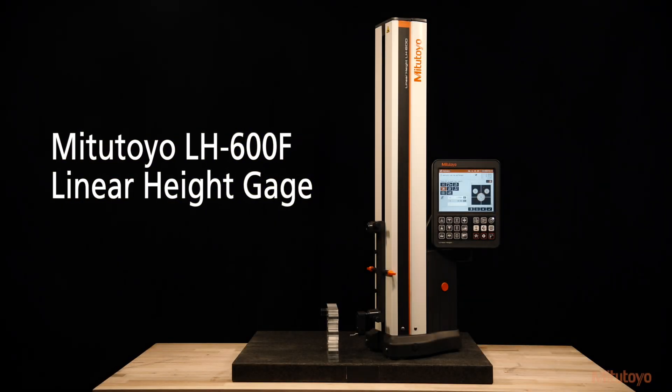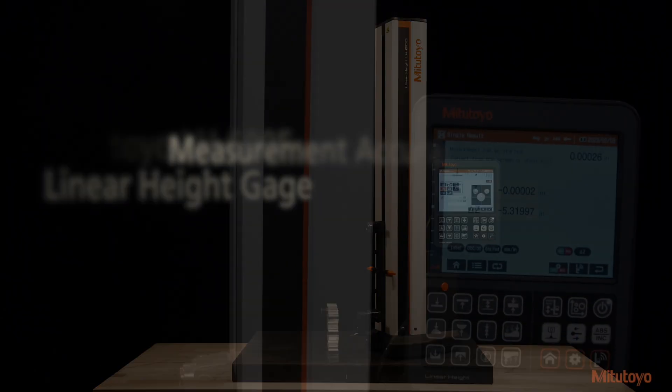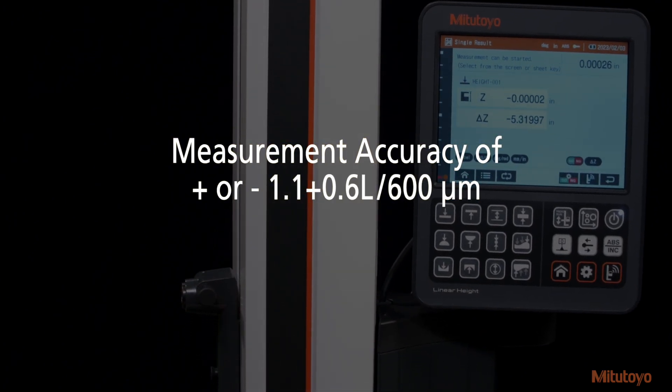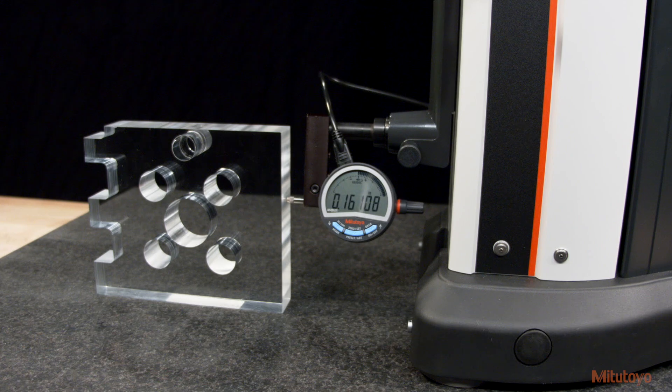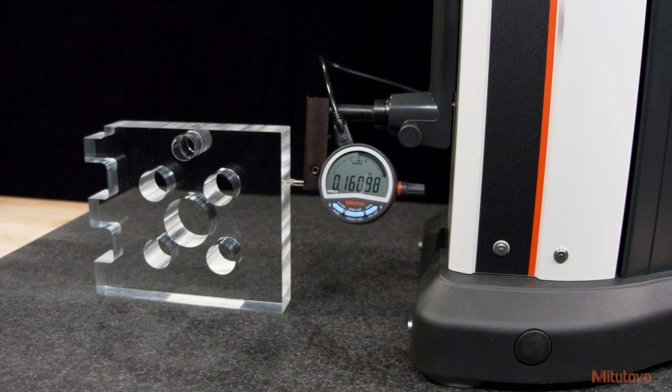The Mitsutoyo LH600F linear height gauge is renowned for its best-in-class linear measurement accuracy, ensuring outstanding precision across its entire measuring range.